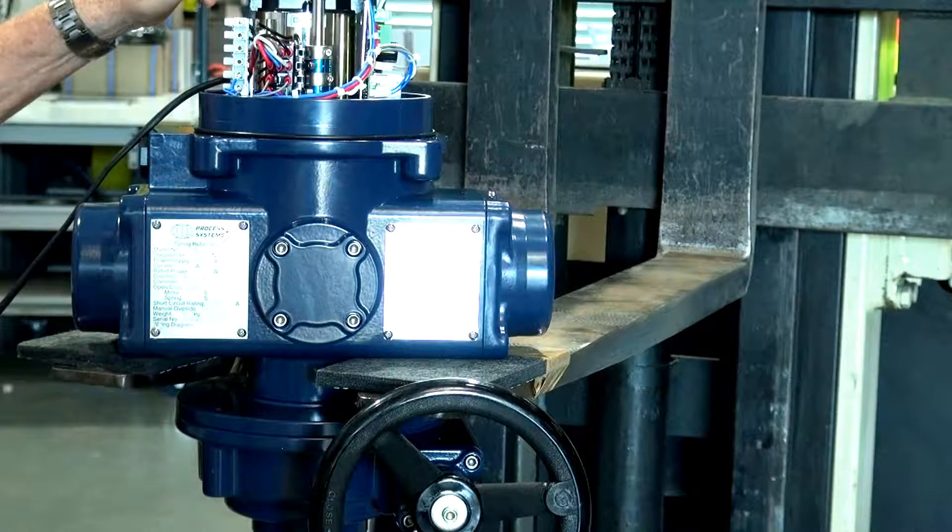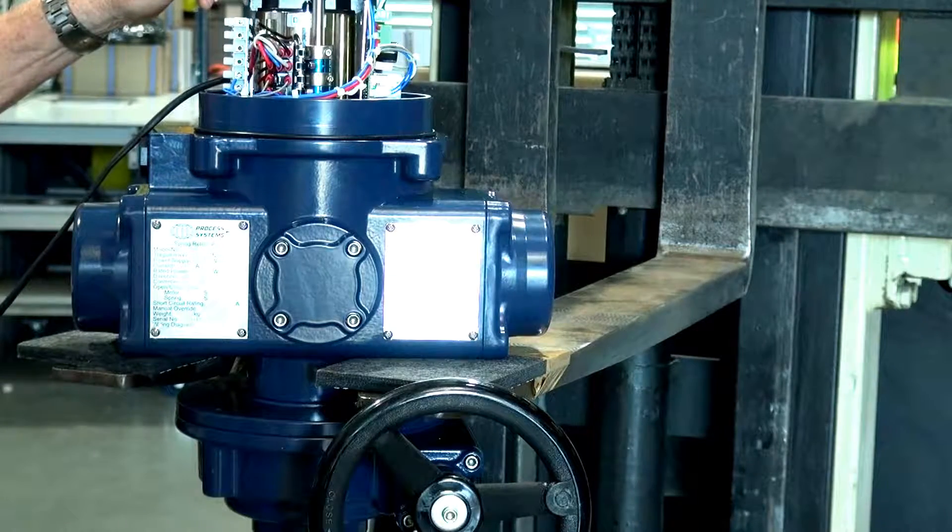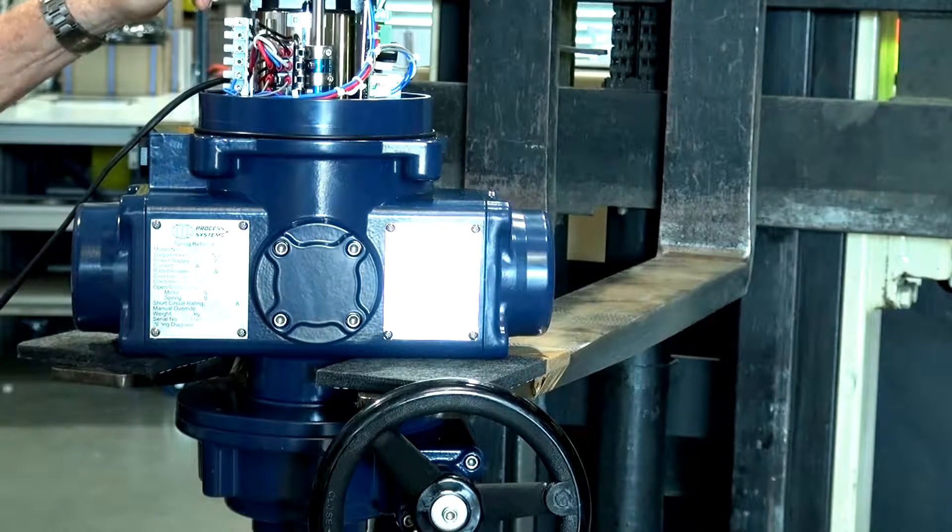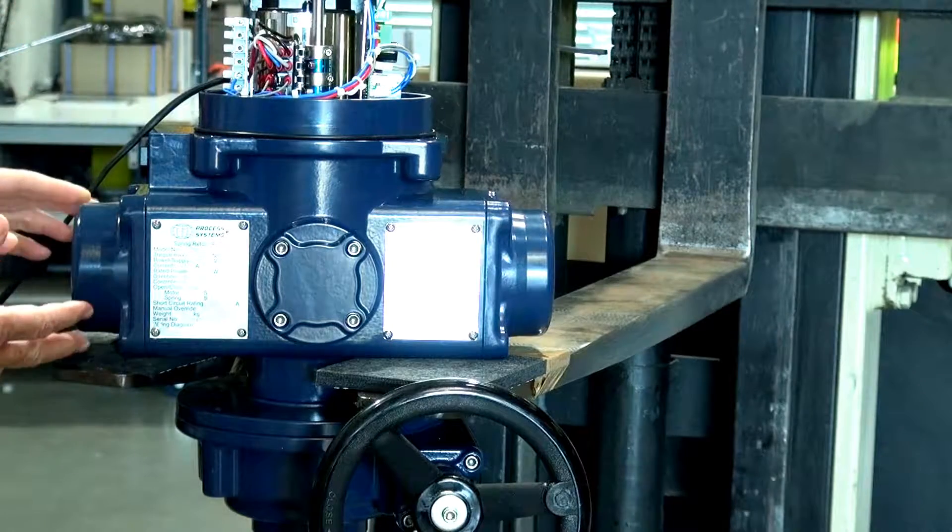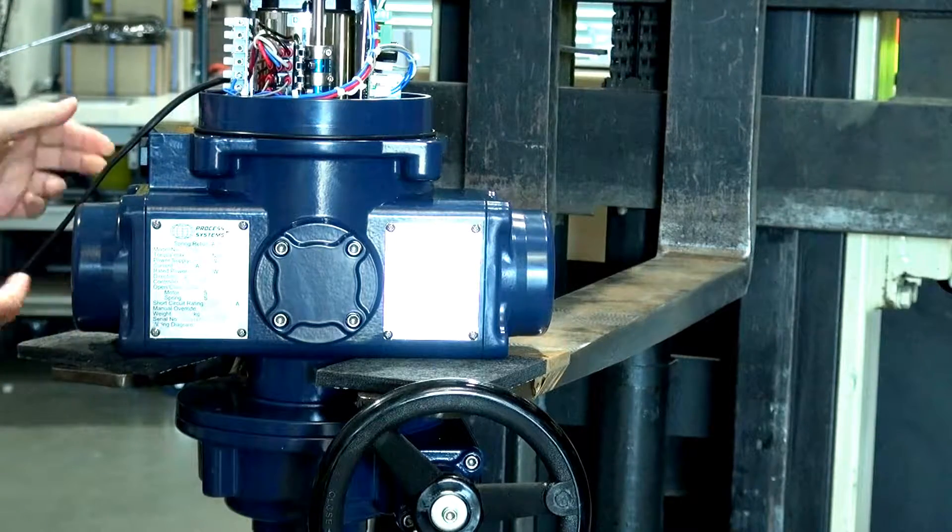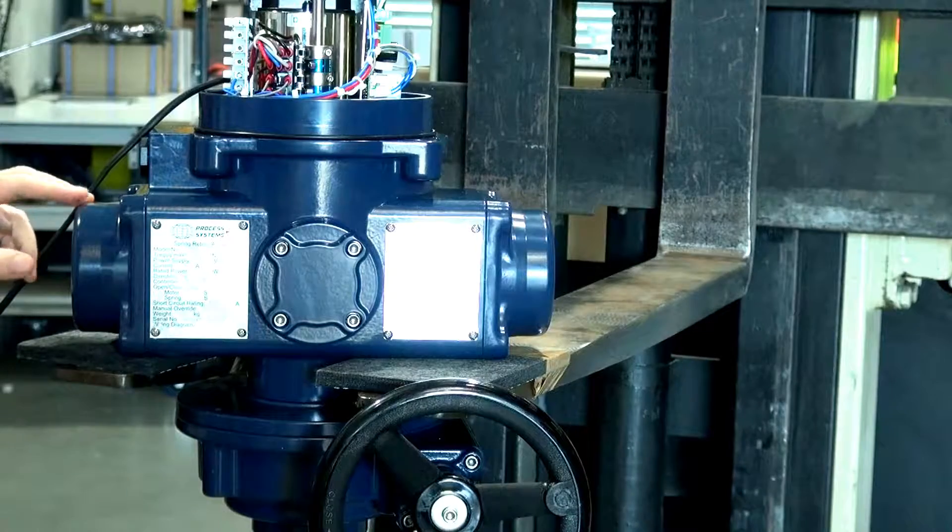The units are available in multi voltages from 240 down to 12 volt DC and they come in various sizes. This one here is the smallest of them and they go up to larger sizes for operating butterfly or ball valves.